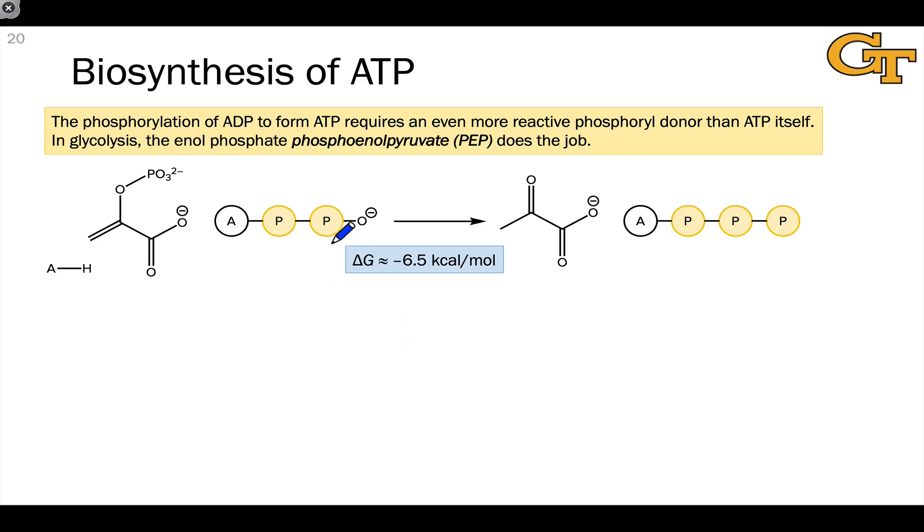When ATP phosphorylates a nucleophile, the typical product is ADP. But if we want to make more ATP, in essence storing energy so we can use ATP to phosphorylate more nucleophiles, we need to go in the reverse direction from ADP and phosphate back to ATP and water.